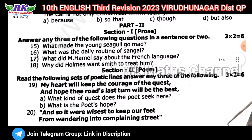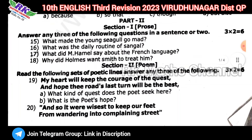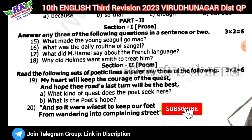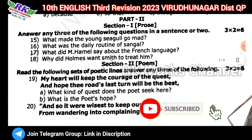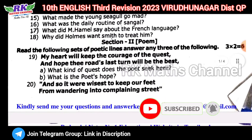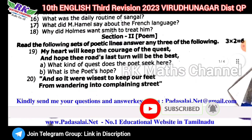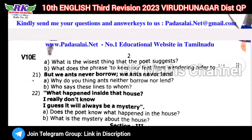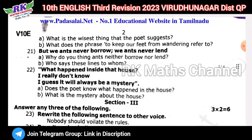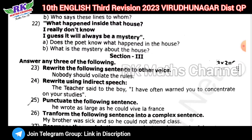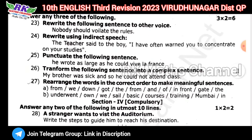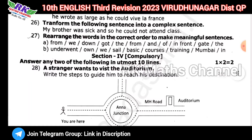Next, Part 2 — total 4 sections. 3 sections, each section 3 questions: Prose, Poetry, Section 3 Grammar — 3 questions, and Section 4 Compulsory questions, Roadmap.